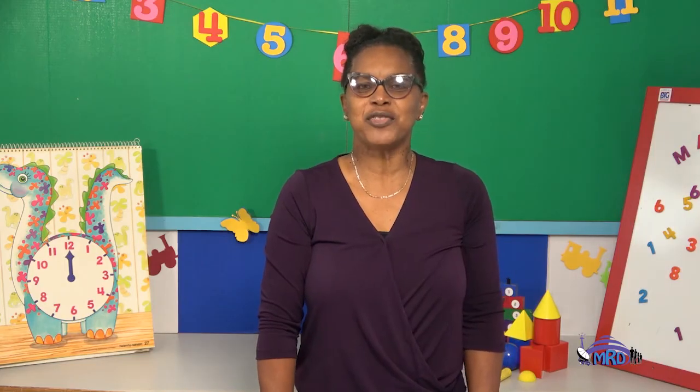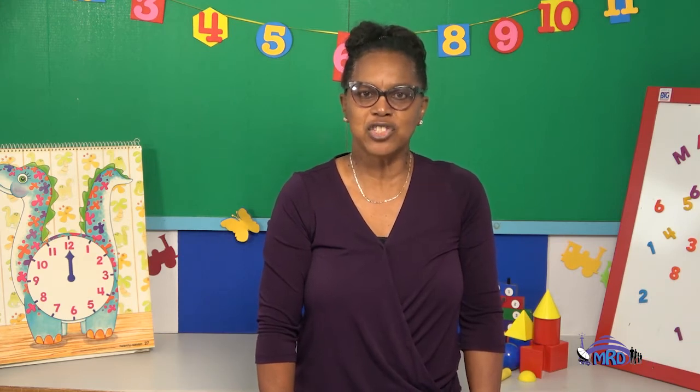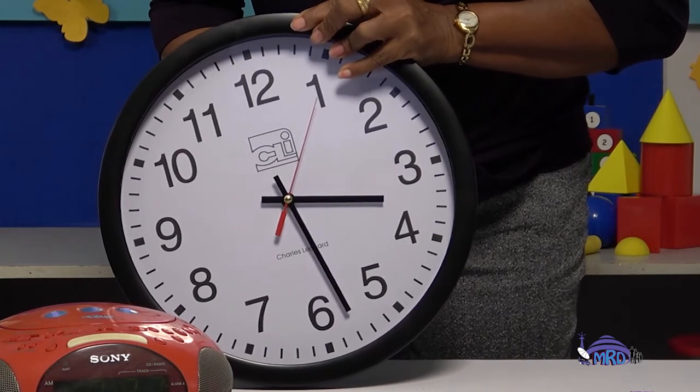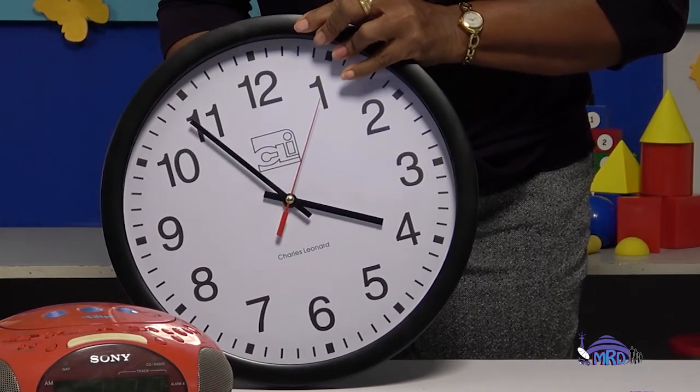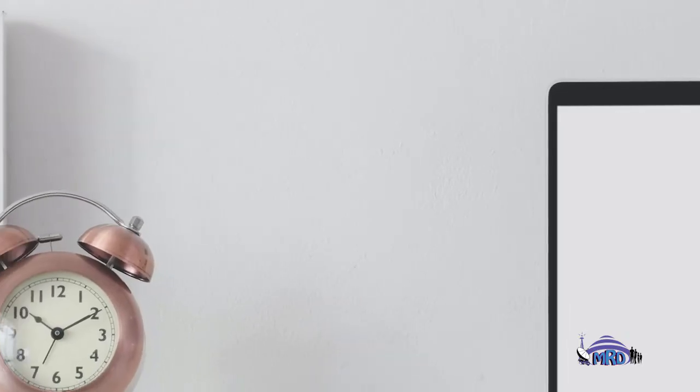We just have enough time for a quick review. There are different instruments that we use to tell the time. They show us the time in analog or digital form. The analog clock has two hands which move in a clockwise direction, while the digital clock has numbers with two dots called a colon between them. Now look around your home and find other instruments which tell the time.